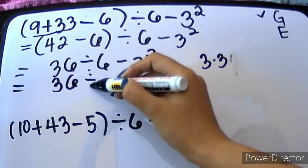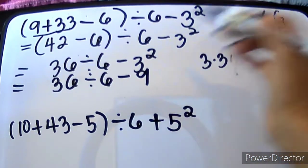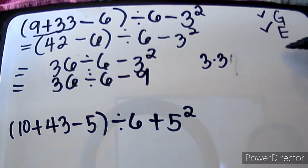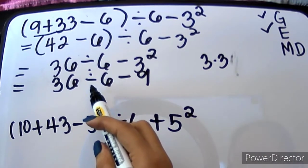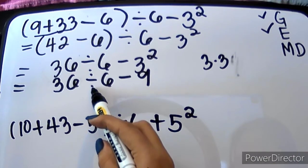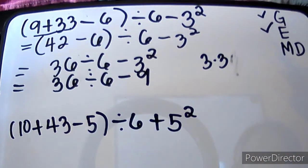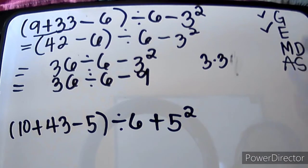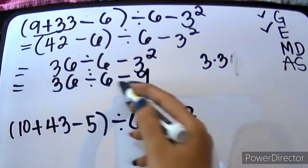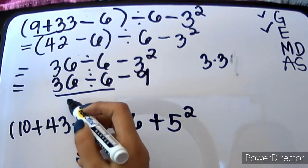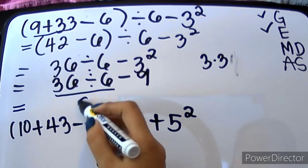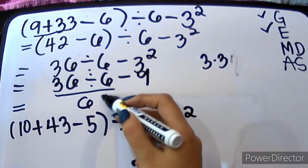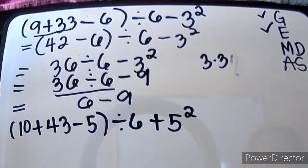So, we have 36 divided by 6 minus 9. We're done with E, wala na pong E. Let's check if we have M or D as they appear from left to right. And if you will observe from left to right, dalawa na lang naman yung operation natin — division and subtraction. Hindi pa tayo pwede pumunta sa subtraction dahil meron pa tayong division. And then, tsaka natin gagawin yung minus 9.